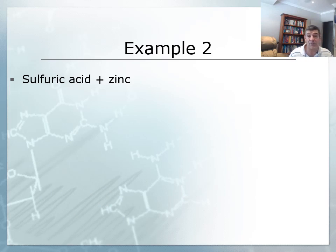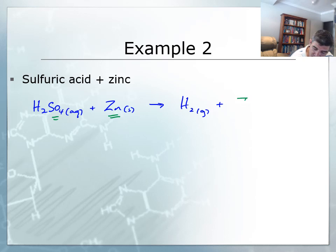Just to have a quick look at an example, sulfuric acid and zinc. So sulfuric acid has the formula H2SO4. And in solution with solid zinc, we would have hydrogen gas, as we know that's one of our products. And the other product is the salt. And so the salt is going to come from the metal and the anion. So in this case, it's going to be zinc sulfate.